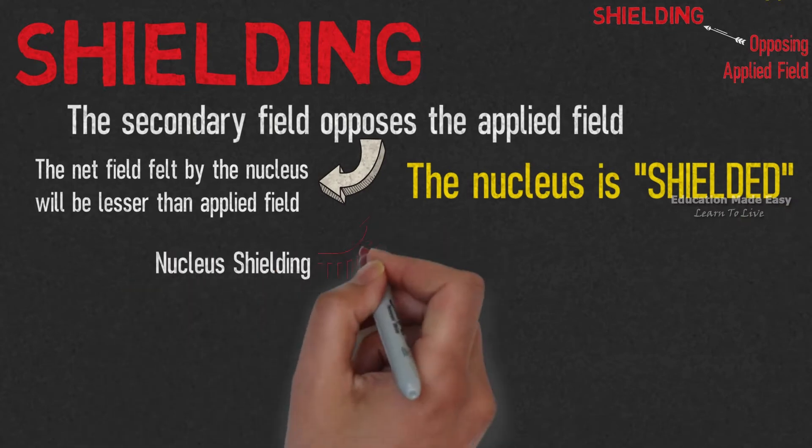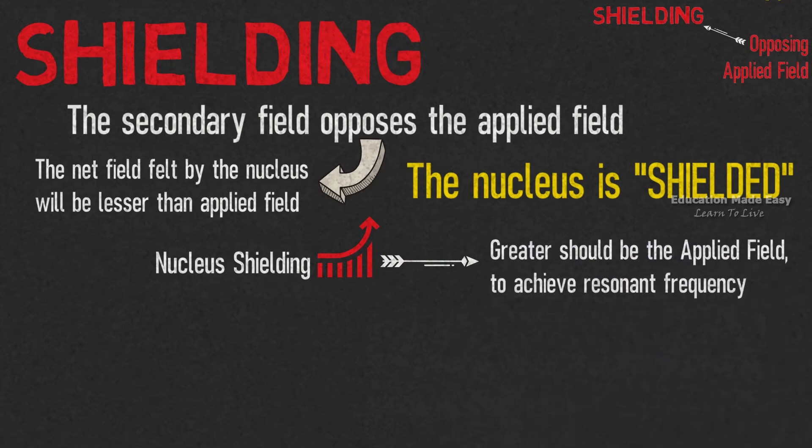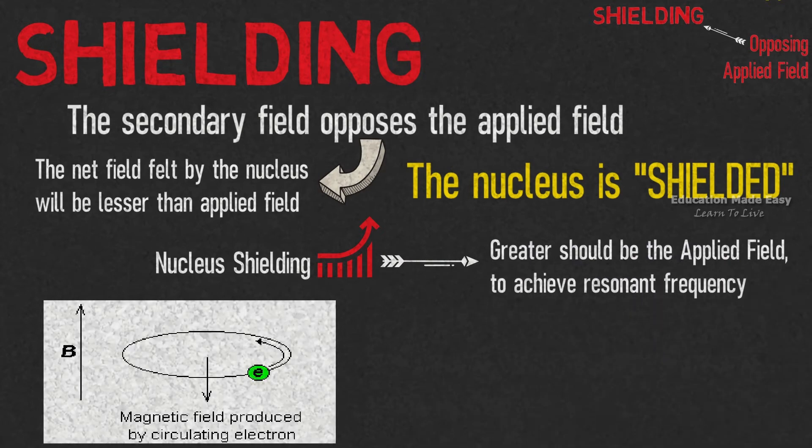Therefore, as the nuclear shielding increases, greater should be the applied field to achieve resonant frequency. The figure represents the shielding effect.